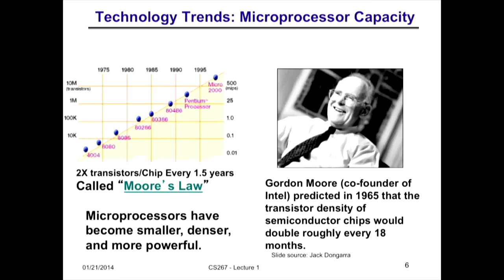Let me tell you about Moore's Law. Gordon Moore was one of the co-founders of Intel. He observed that the number of transistors per square millimeter was going to double every 18 months. You could keep making computers smaller, or make them bigger and more powerful. A plot with years on the horizontal axis and transistors per fixed chip area on a log scale shows a straight line — this held up for many years. This explains why computers got fast and why parallelism was a failure for so long.